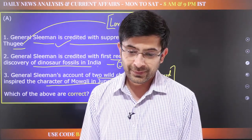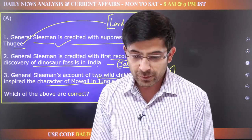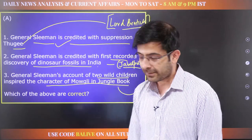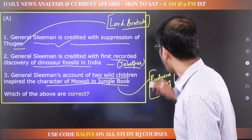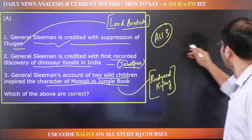When he was posted in Madhya Pradesh, Sleeman wrote down his accounts, and that became the inspiration for Rudyard Kipling to write Jungle Book with the main character Mowgli. All of us must have seen or read or heard about Mowgli. All three statements are correct here.